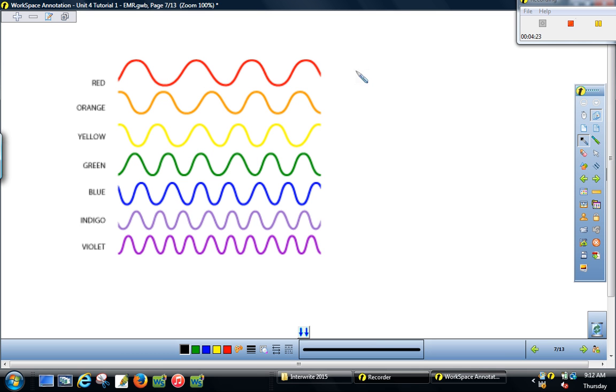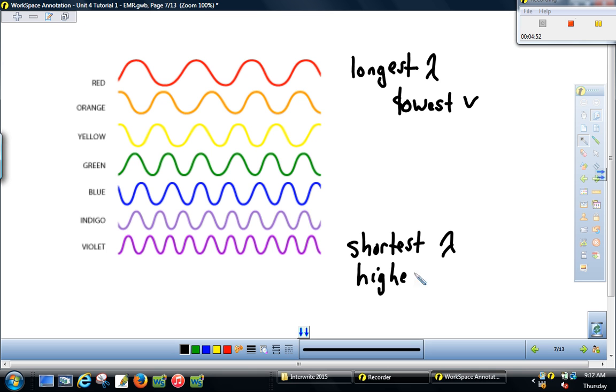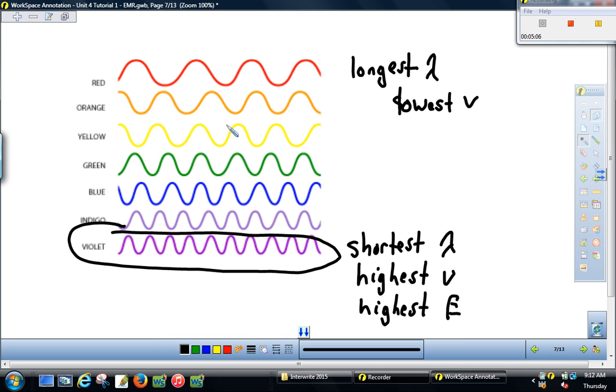If we look at light, red light has the longest wavelength and it has the lowest frequency. Violet light has the shortest wavelength. The waves are closest together and it has the highest frequency. Alright. Which light has the highest energy? Well, there's a direct relationship between frequency and energy. And so violet has the most energy out of all the different types of color light.